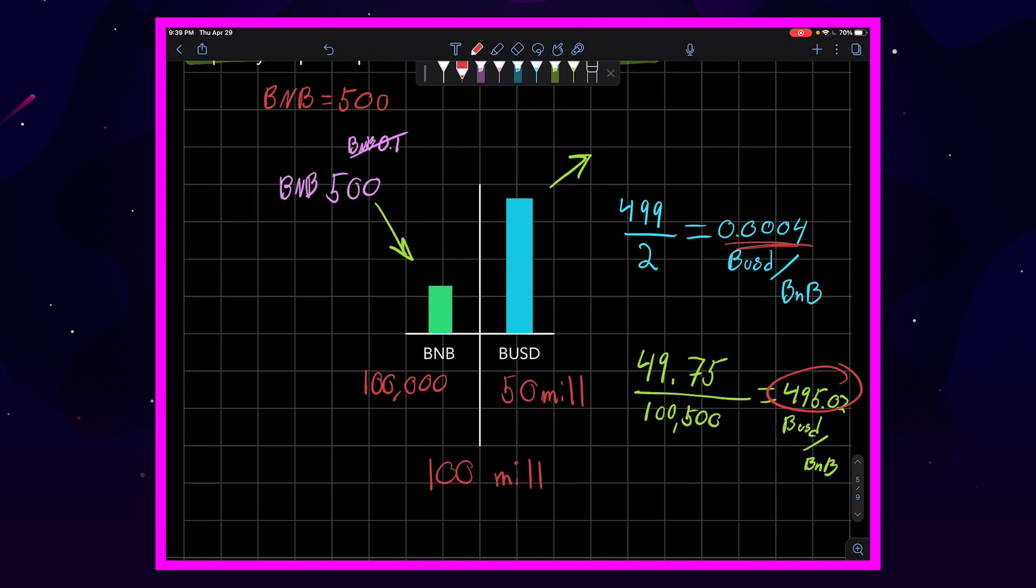As you can see, this number is much better looking than this number, and the reason that's happened is because there's more liquidity in the pool. There's more tokens, there's more dollar value to be able to facilitate larger trades moving through the pool.